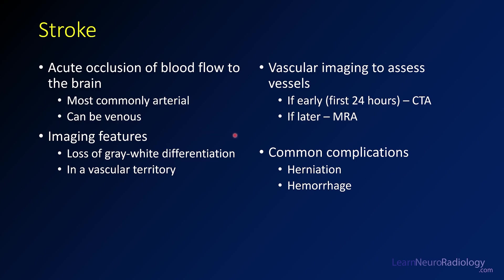Your imaging features — most commonly what you're going to see, particularly on CT, is the loss of gray-white differentiation. You're no longer going to be able to tell the difference between gray matter and white matter. That abnormality is also going to be in a vascular territory, which is a clue that you're dealing with a vascular pathology. If you see this on CT, many times you'll want to move on to vascular imaging. If it's early, such as in the first 6 to 24 hours, you'll probably get a CT angiogram. If it's a little later, you might get an MR angiogram as part of a complete stroke MR workup. Common complications of stroke include herniation and hemorrhage, which you want to be on the lookout for.